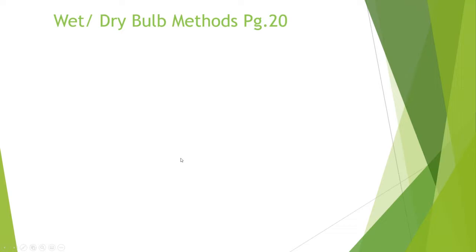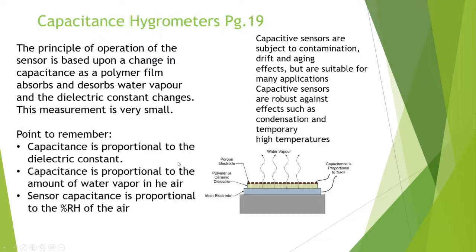Capacitance hygrometers are quite common. They are rated for about 5,000 PSI, but an important caution: if you pressurize or depressurize them too fast, you can damage the sensor. That is a real-world lesson worth remembering.